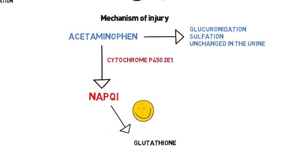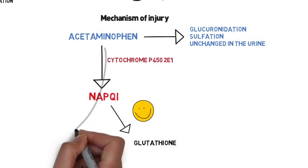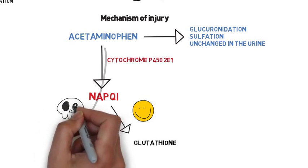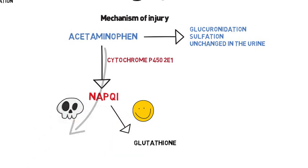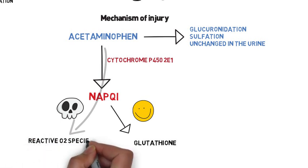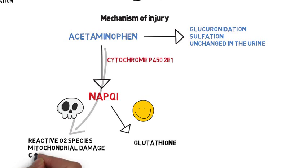However, in supratherapeutic ingestions, more and more substrate is metabolized via the CYP450 pathway. This creates more and more NAPQI, which overruns the cell's glutathione stores. It can then bind indiscriminately to macromolecules, causing reactive oxygen species formation, mitochondrial damage, and eventually cell death.